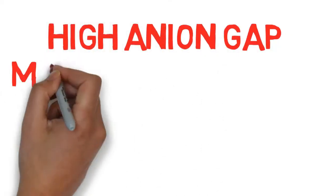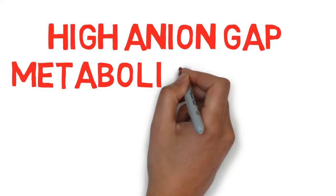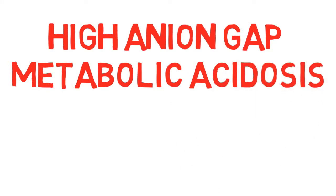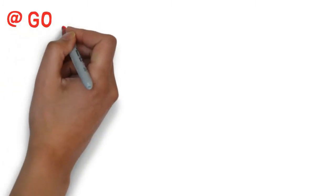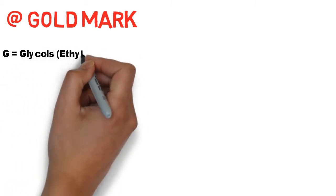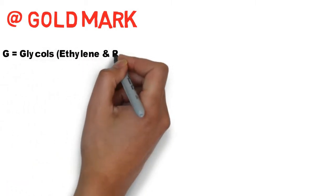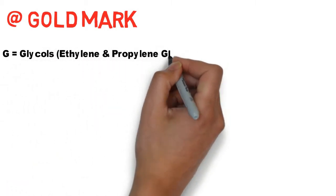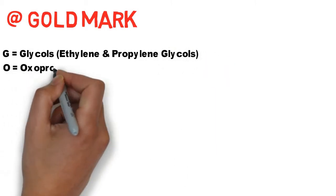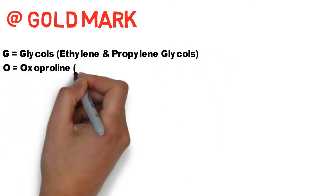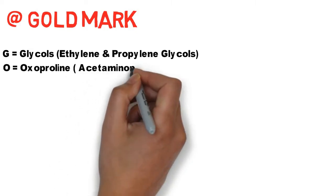In this video we'll learn easy mnemonics to remember the causes of high anion gap metabolic acidosis. The first mnemonic is GOLDMARK, where G is for glycols — either ethylene glycol or propylene glycol — and O is for oxoproline, which is a metabolite of acetaminophen.